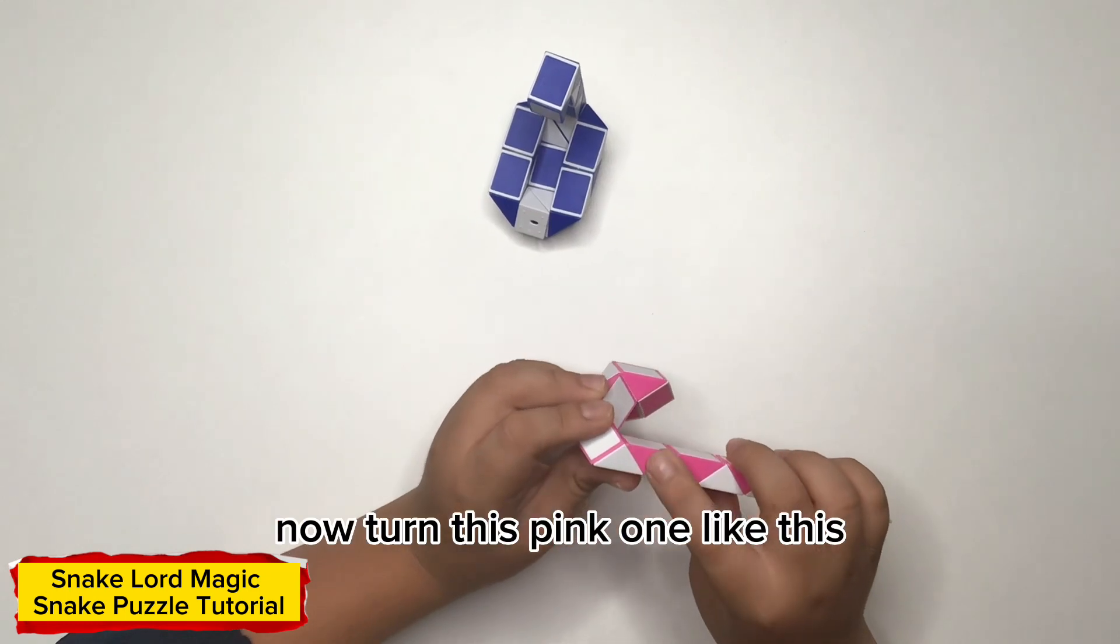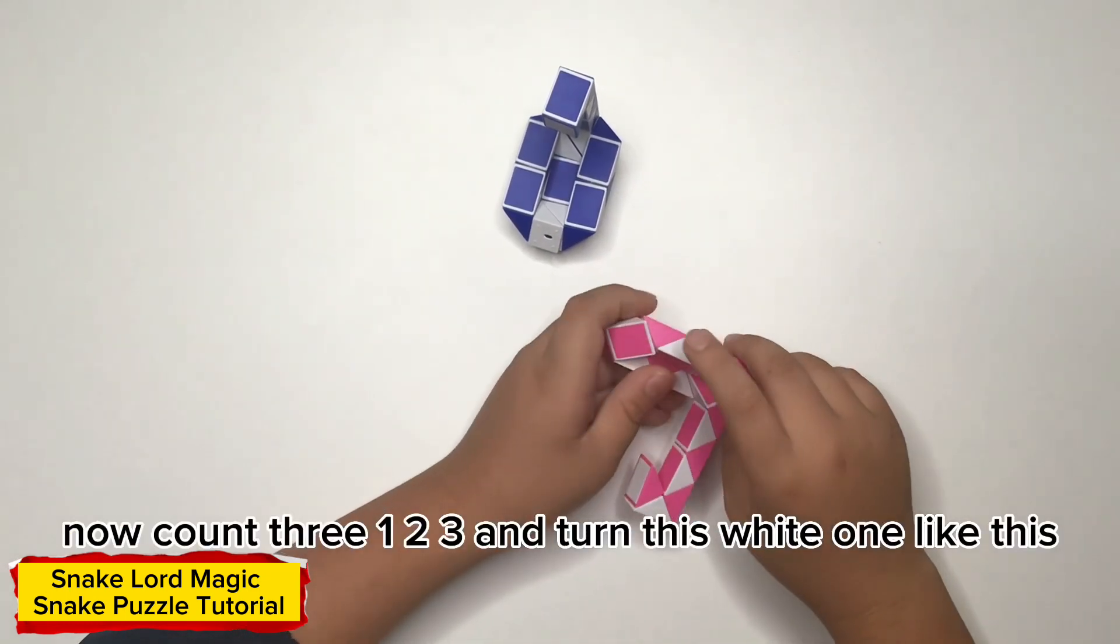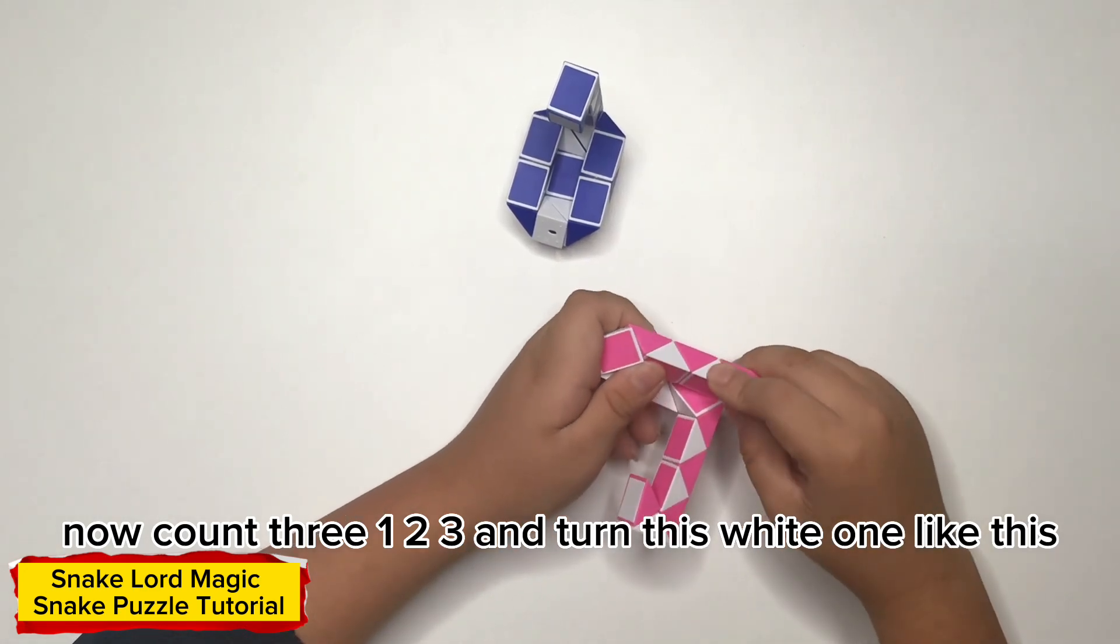Now turn this pink one like this. Now count three: one, two, three, and turn this white one like this.